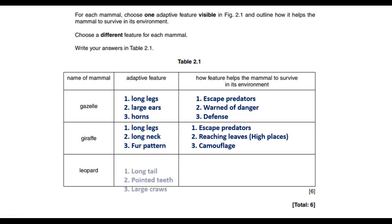For the leopard we talked about the long tail, pointed teeth, and large claws. The long tail helps to maintain balance, the pointed teeth are what it uses to tear off or eat prey, and the large claws are to disable prey. These are the adaptive features and how they help the mammal to survive.